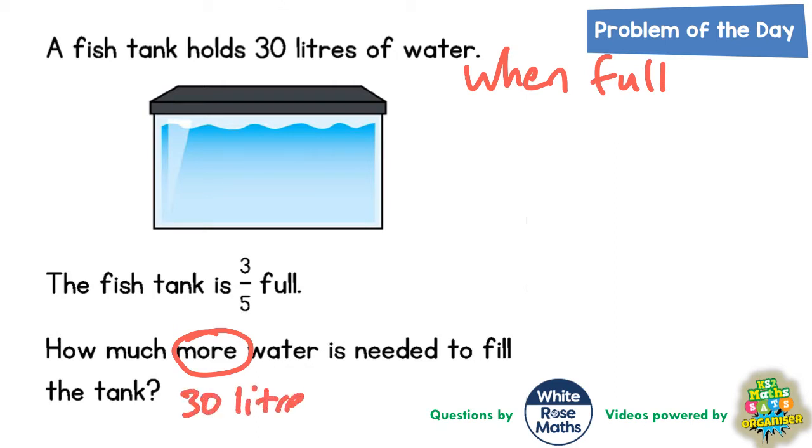There's a couple of ways we could do this. First of all, we could say, well, if the fish tank is three fifths full now, we need an extra two fifths to fill it up completely. So the extra two fifths is going to be two fifths of 30, so we could actually work out what two fifths of 30 is.